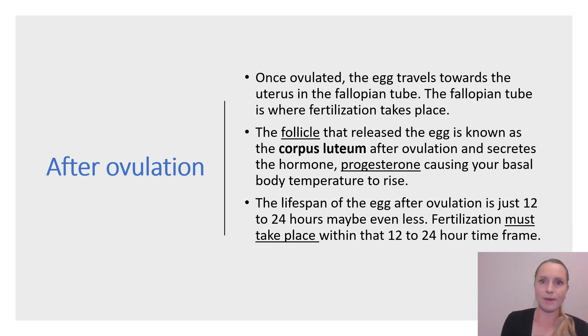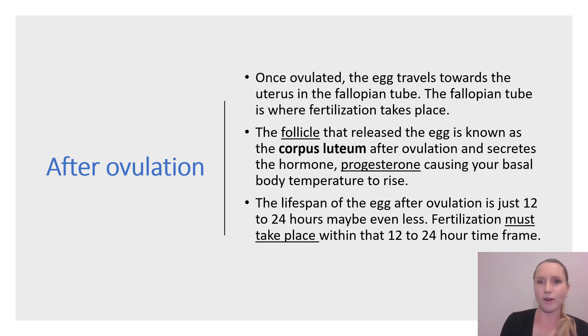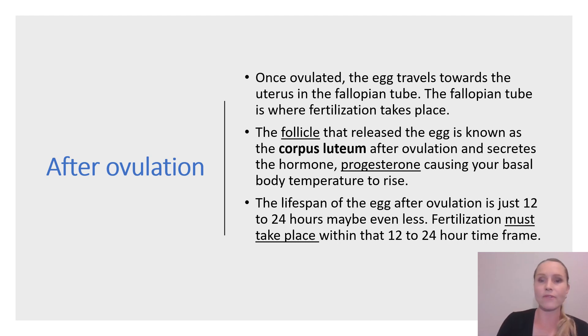Once ovulated, the egg is picked up by one of the fallopian tubes, and it begins to travel down towards your uterus in the fallopian tube. This is where fertilization, if it is going to happen, takes place — in the fallopian tube.